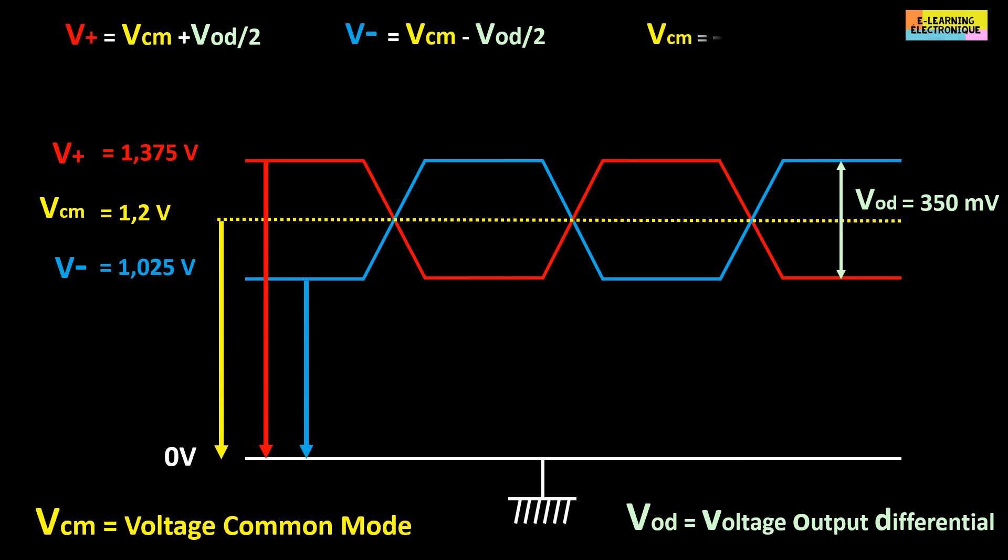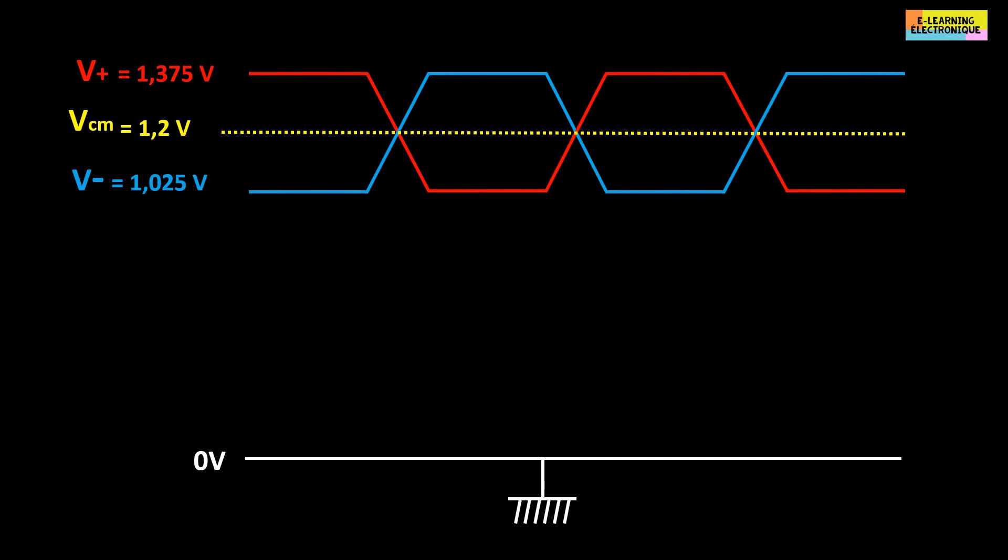Note that the value of the common mode voltage equals V+ plus V- the whole divided by two. Therefore, the logic output level at the receiver will result from the comparison of the input voltage V+ and V- with respect to the reference voltage VCM.